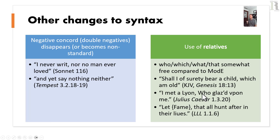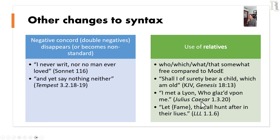The use of relative pronouns — who, which, what, that — was not yet standardized in early modern English. The rules distinguishing 'that' from 'which' were quite shaky. For example: 'shall I of surety bear a child, which am old' — we would now expect 'who am old.' Another example: 'I met a lion who glared upon me' from Julius Caesar. Also, 'that' was used for non-restrictive clauses, something modern English does not permit.